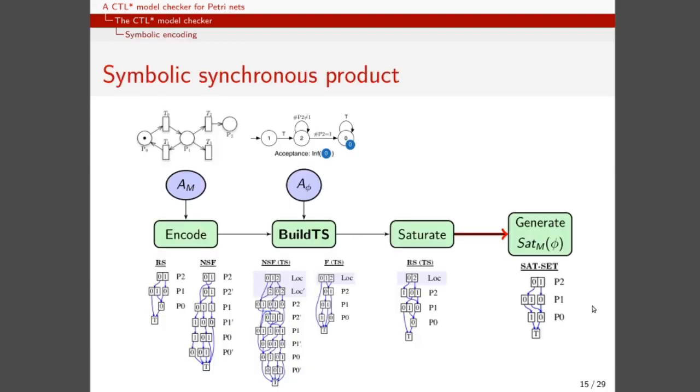This synchronous product is symbolically encoded using a procedure which starts from our model and our automaton and generates a transition system using decision diagrams. We start by encoding the automaton representing the reachability graph of the Petri net as a reachability set of states and a transition relation which we are going to call next state function. We again give the algorithm build.ts the automaton represented in the HOA format and the encoded model. And we generate another transition relation which includes the location of the automaton, a set of final states and a set of initial states which are not shown here. We then apply a saturation procedure to generate the reachability set of our transition system from the next state function and the initial state, and we use this reachability set, the next state function and the final states to generate the set of states satisfying the proposition phi over the model M.